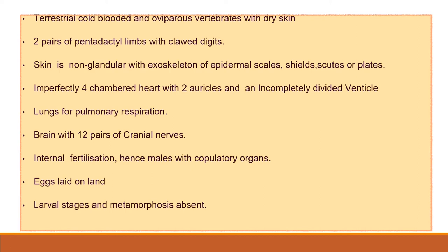Eggs are laid on land. The egg is protected by a shell and contains a large amount of yolk. There are three embryonic membranes — amnion, allantois, and yolk sac — during development.